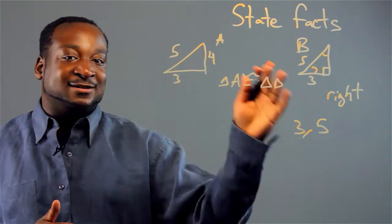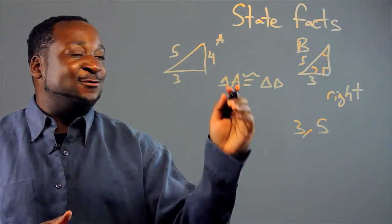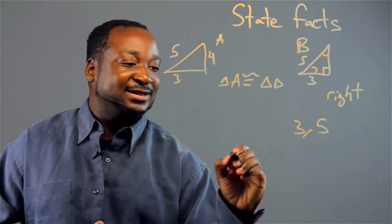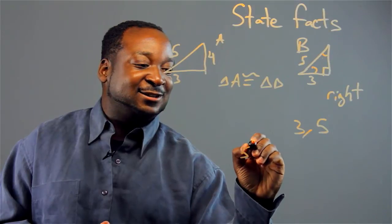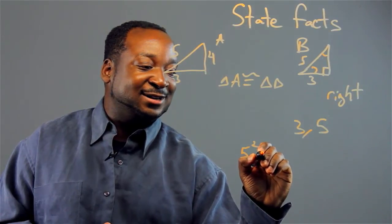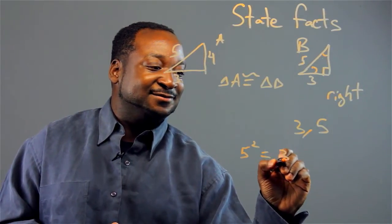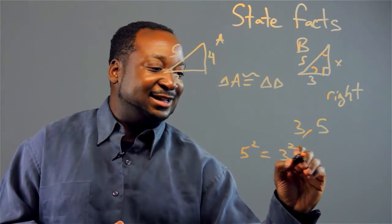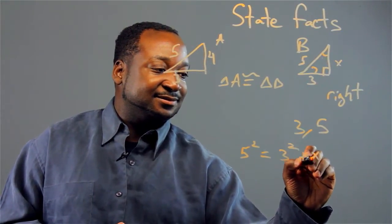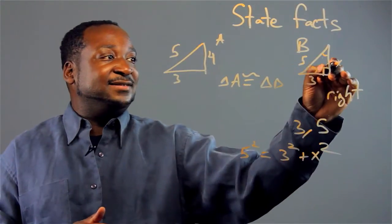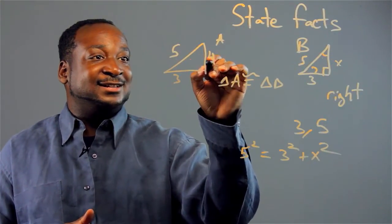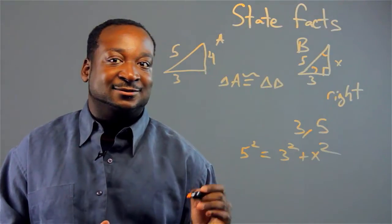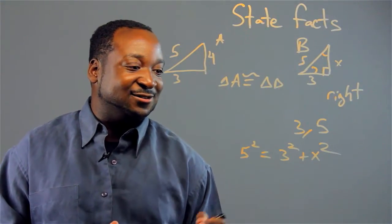So these are facts. Now we have our formula A squared plus B squared equals C squared. So this side here, we'll call it X. If X is equivalent to this, we know that the two triangles will be congruent.